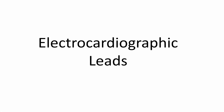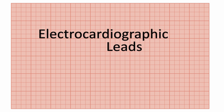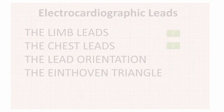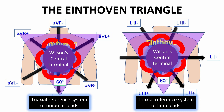In the last video, we talked about the limb leads and the chest leads, and we know the difference between them. We also started to talk about the Eindhoven Triangle and the triaxial reference system of unipolar leads and the triaxial reference system of limb leads.